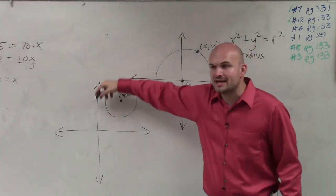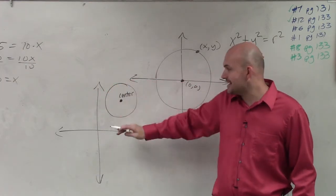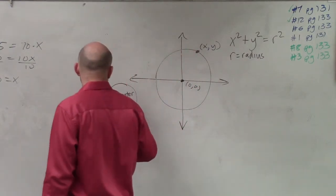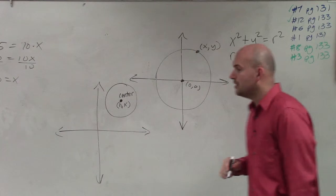Because x and y represent the points on the circle, correct? So I don't want to use x and y for the points of the center. So what we come up with is using the points h and k, all right?